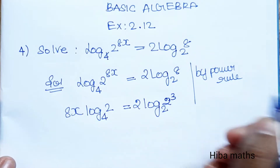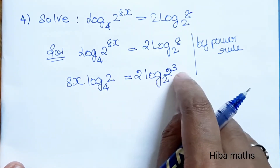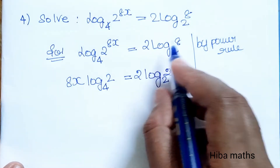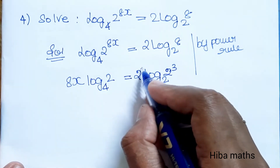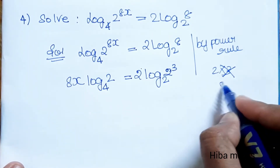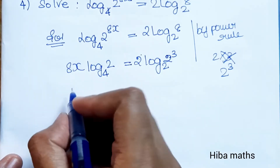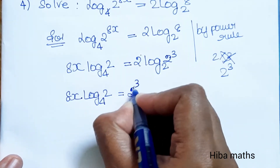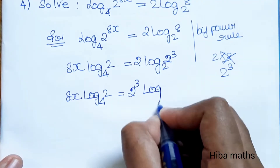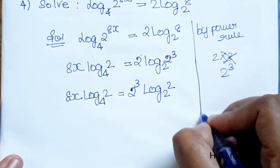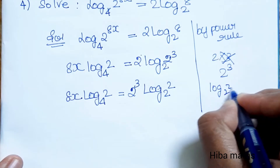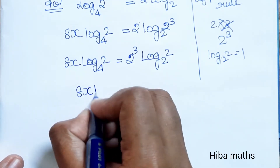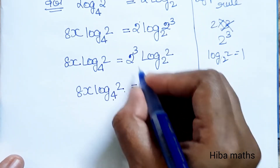8x is equal to 2 cubed. Now we have 2 cube, and by the power rule we bring 3 in front. So 2 into 3 is equal to 2 power 3 is equal to 1. So 8x log base 4 of 2 is equal to 2 cube. Now we have 2 power 3 equal to log base 2 of 2, and log base 2 of 2 value is equal to 1.